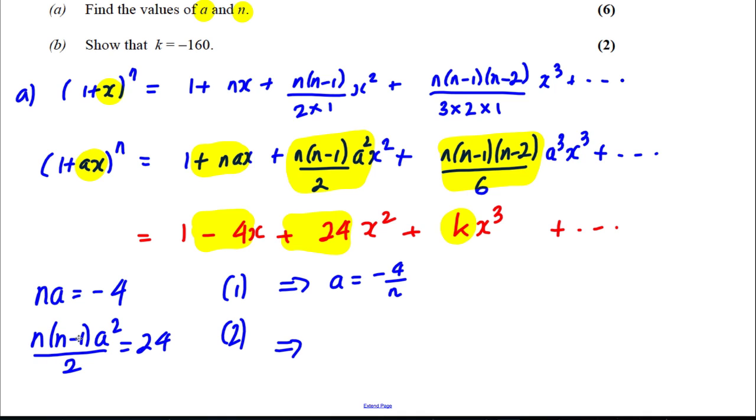And just tidying this one up, doubling both sides and expanding the brackets, we could say that N squared subtract N, A squared would be equal to 24 times 2, which is 48. Just tidying those up. And I might call that 3 and 4.